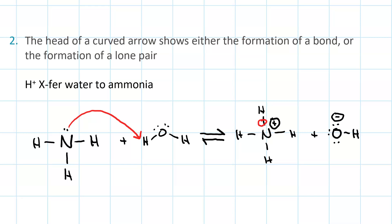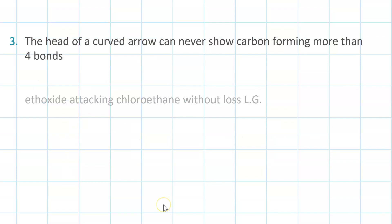The second curved arrow starts on the sigma bond between the oxygen and the hydrogen, becomes a lone pair on the oxygen. That lone pair. The head of a curved arrow can never show carbon forming more than four bonds. That would exceed the octet rule. You never want to do that.